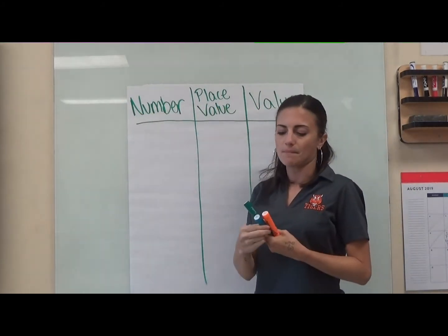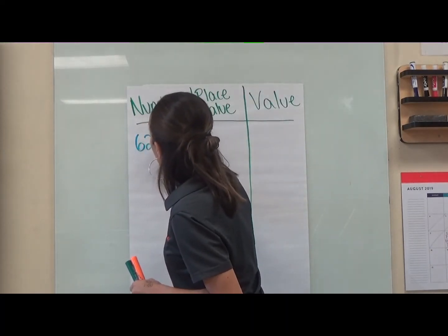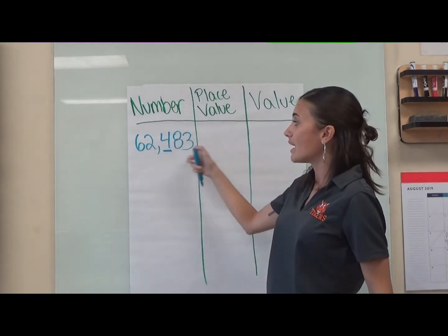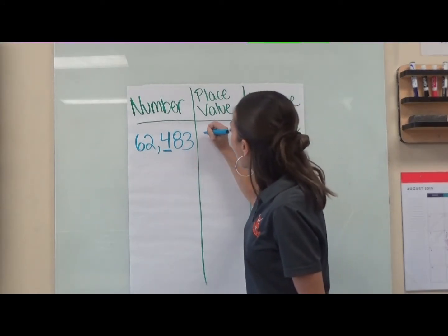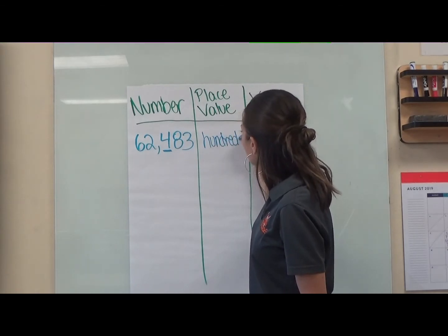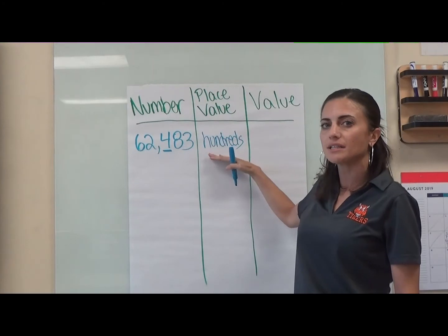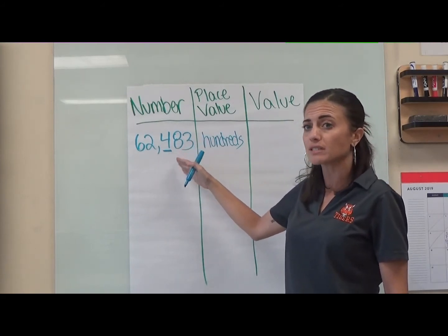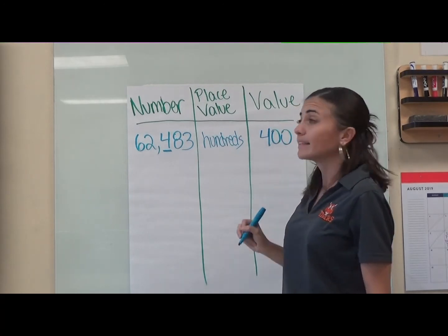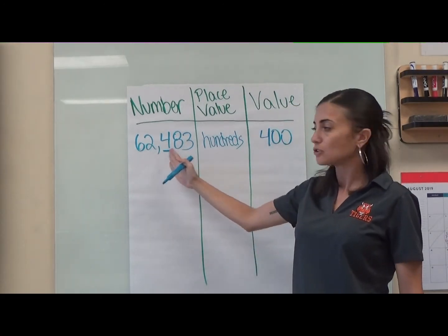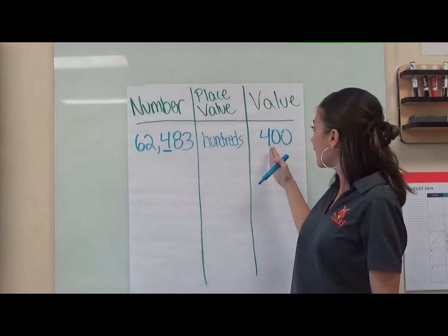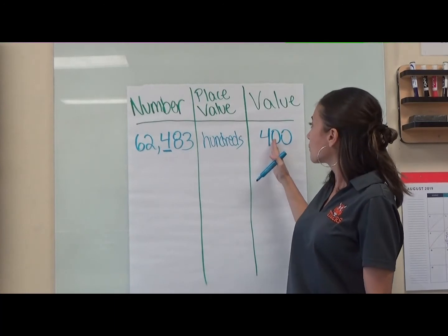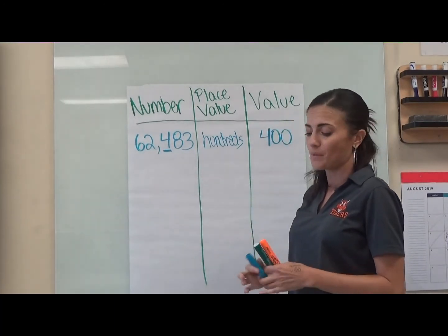Let's use this to make some examples. If I have the number 62,483 and my four is underlined, then my place value of the underlined digit is the hundreds place — my four is in the hundreds place. But my value is how much this four is worth; it's a four in the hundreds, that's four hundreds, so it is four hundred. I can check my work: the underlined digit four should match the initial digit in my value — four and four, good. Then I count the place values that come after it: there are one, two place values after it, so I should have one, two zeros — four hundred.